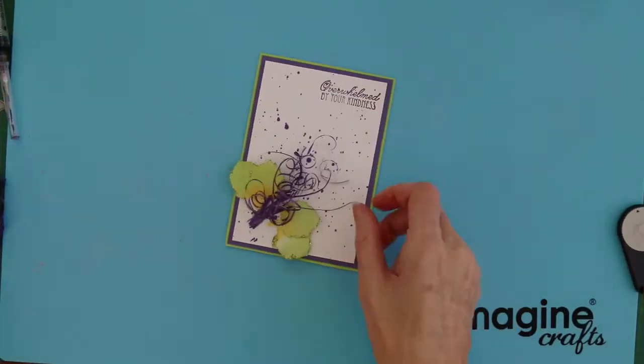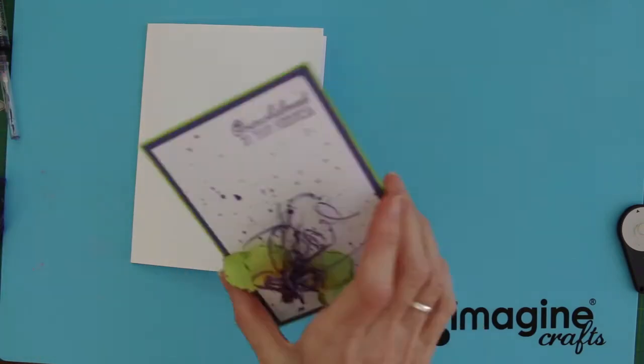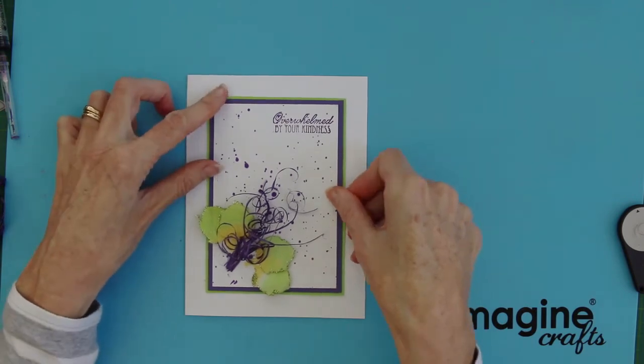Once you have coloured both the flowers you can then add some leaves and a little bit of twine to the front of the design. Mount onto your card base and then attach the flowers.